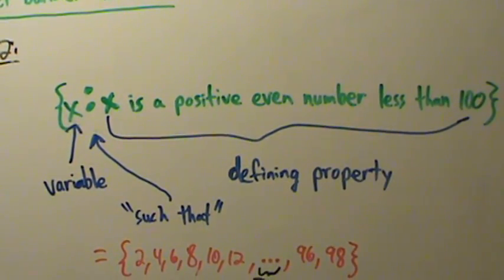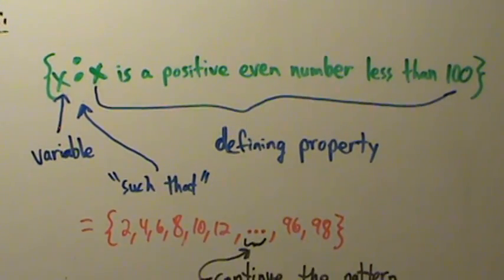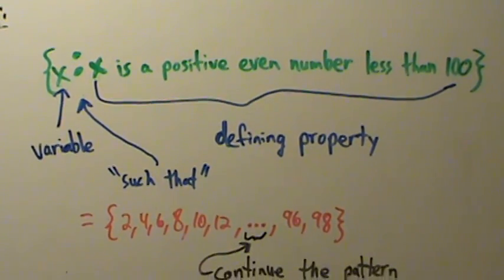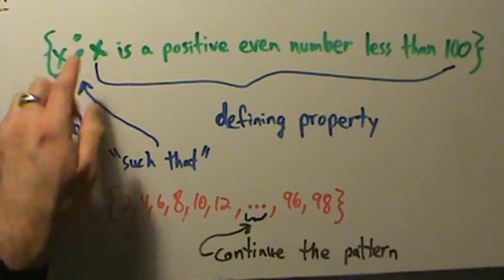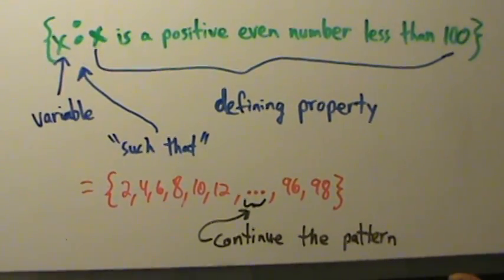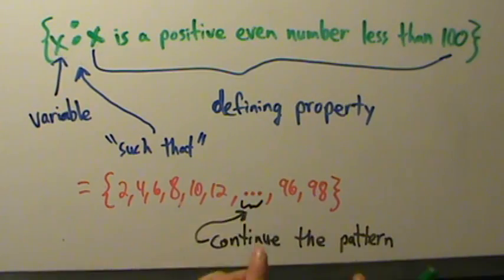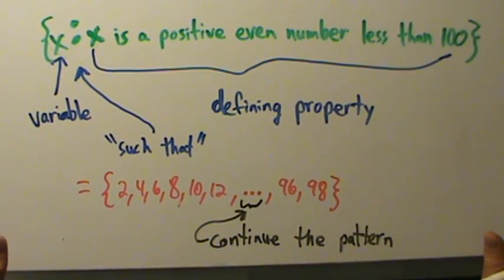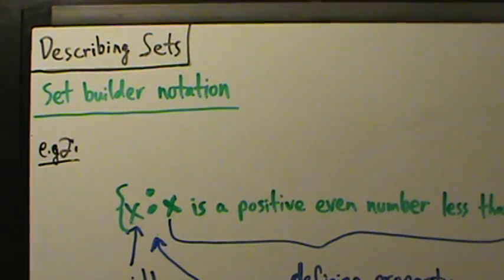So that's two examples with set-builder notation. Keep in mind: vertical bar or colon both mean 'such that,' and we also talked about continuing the pattern with ellipses. We'll revisit ellipses in a later video. That's all for set-builder notation.